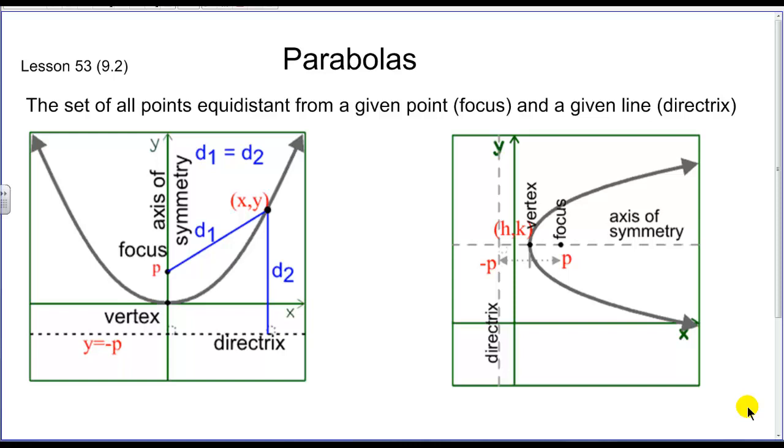In front of us we see two types of parabolas, one which is a function, and one which isn't because it doesn't pass a vertical line test. But in both cases, you'll see that we have this figure that looks like a U, or a parabola,